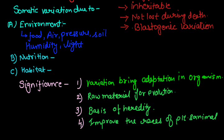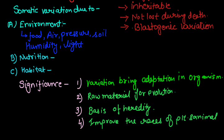This is the introductory part of the chapter — what is variation, what is heredity, what is genetics, and what are the different terminologies regarding genetics. Today we discuss Mendel's contribution. Mendel is known as the father of genetics and his time period is 1822 to 1884. Basically he was not a scientist — he was a monk in the church in Czechoslovakia, and he conducted various experiments on garden pea.